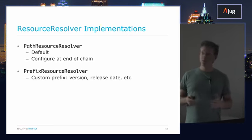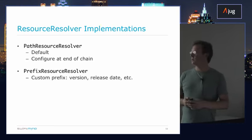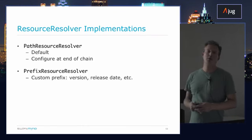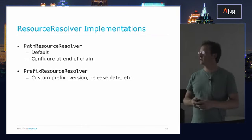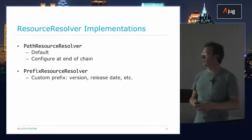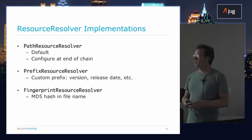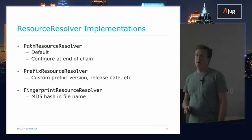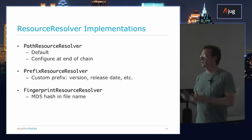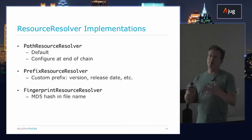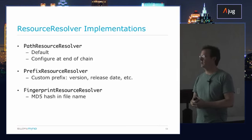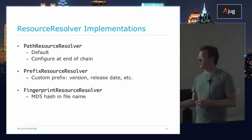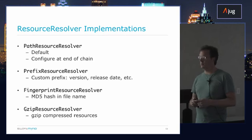You can also use a prefix-based resource resolver — for example, defining a custom prefix, maybe the current version of your JavaScript files or a release date, something like that. Or something more unique: the fingerprint resource resolver, which uses an MD5 hash for the uniqueness of the contents of the file, adding that into the file name and then allowing you ways to parse that out and tell the client which version or what the name of the file to use.